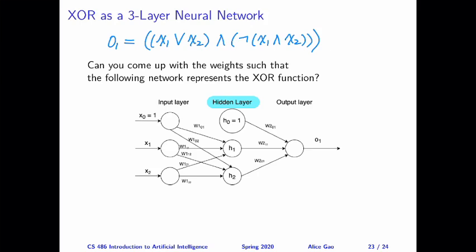And it's not the case that X1 and X2 are both true. So you can see by having this expression, we've broken down the exclusive OR into an expression just involving AND, OR, AND NOT. And it turns out we are able to represent all of these using perceptrons.